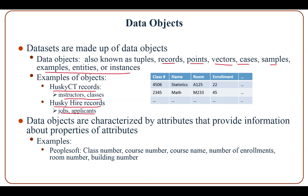Data objects are characterized by attributes that provide information about properties. For example, in a PeopleSoft system, attributes are class number, course number, course name, number of enrollments, room number, and building number.